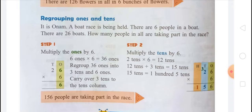In step one, multiply the ones by 6. Six ones multiplied by 6 equals 36 ones. Regroup 36 ones into 3 tens and 6 ones, and carry over 3 tens to the tens column. In step two, multiply the tens by 6. Two tens multiplied by 6 equals 12 tens. Twelve tens plus 3 tens equals 15 tens. In simplest form: 6 sixes are 36, write 6 carry 3; 6 twos are 12, plus 3 is 15. So there are 156 people taking part in the race.